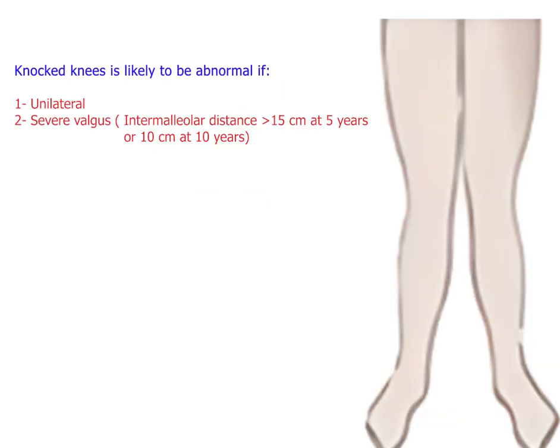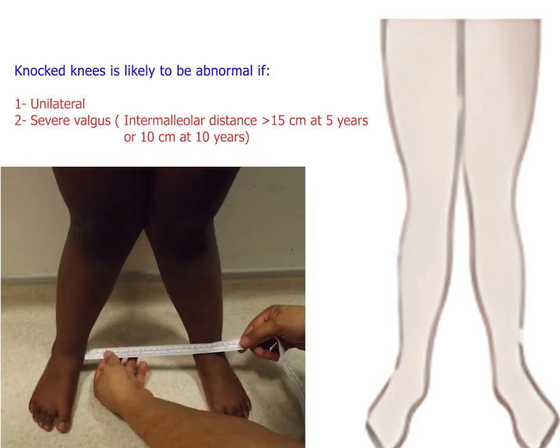Similarly, knock knees are likely to be pathological if they are unilateral or if they are severe. The severity of knock knees is usually measured by the distance between the two ankles, called the intermalleolar distance. If it is 15 centimeters or more at age five years or younger, this is usually pathological. Likewise, if it is 10 centimeters or more at age 10 years or younger, this is pathological and should prompt further investigation.